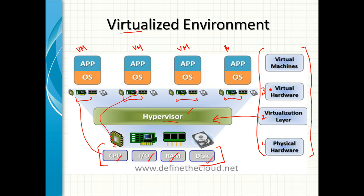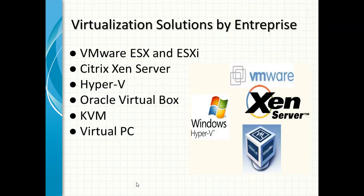Then comes the virtual machines concept at the fourth level. As learned in the previous session, a virtual machine consists of an operating system and the applications running on it. In this example, four different virtual machines are running on this platform. Virtualization solutions are provided by various enterprises, such as VMware ESX and ESXi, Citrix XenServer, Hyper-V, Oracle VirtualBox, Virtual PC, and KVM — there are many virtualization products available in the market today.